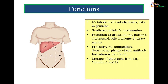Liver is an important metabolic organ. The liver is responsible for metabolism of carbohydrates, fats and proteins. It is important for synthesis of bile and prothrombin. The liver is important for excretion of drugs, toxins, poisons, cholesterol, bile pigments and heavy metals. The liver is protective in function — it achieves this by conjugation, destruction, phagocytosis, antibody formation and secretion. The liver is responsible for storage of glycogen, iron, fat, and vitamins A and D. We see that there is a plethora of important functions associated with the liver.